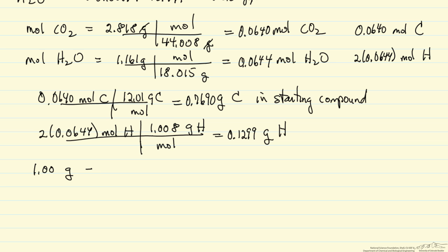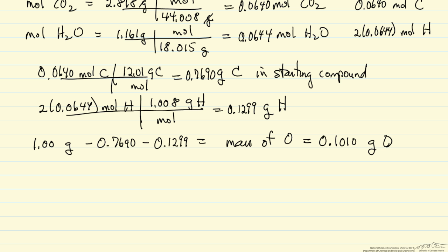I start out with 1 gram of my compound. Now I know that 0.7690 grams are carbon. If I subtract that from the total, and then I subtract the mass of hydrogen, this will be the mass of oxygen in my starting compound.